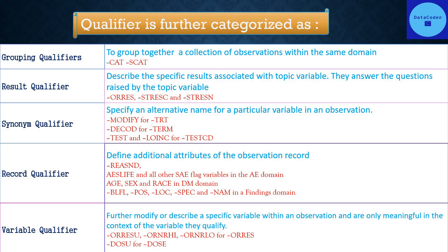Result qualifiers describe the specific result associated with the topic variable — they answer the questions raised by the topic variable. Examples include original result (ORRES), character result, and numeric result.